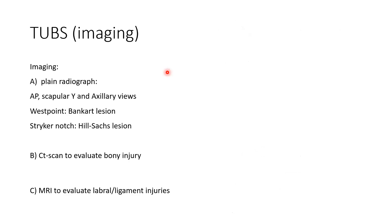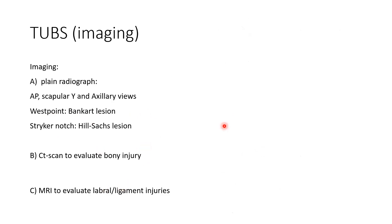Imaging includes plain radiograph: AP view, scapular Y view, and axillary view. Special X-ray views include the West Point view to look for bony Bankart lesion, and the Stryker notch view to look for Hill-Sachs lesion. CT scan is used to evaluate any bony injury, and MRI to look for labral and ligament injury.